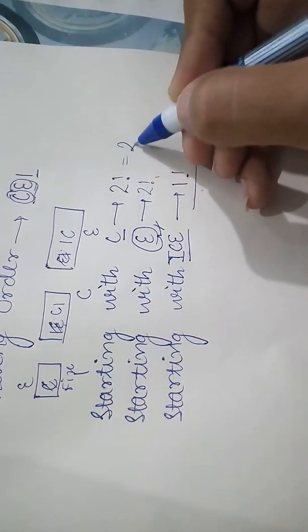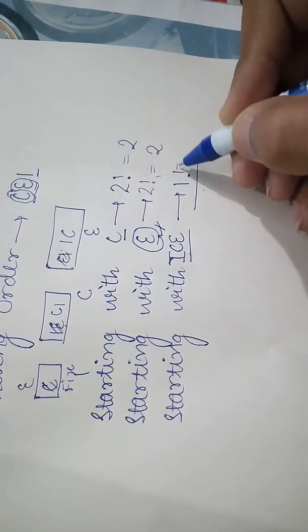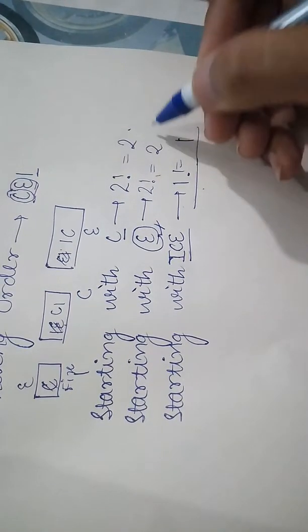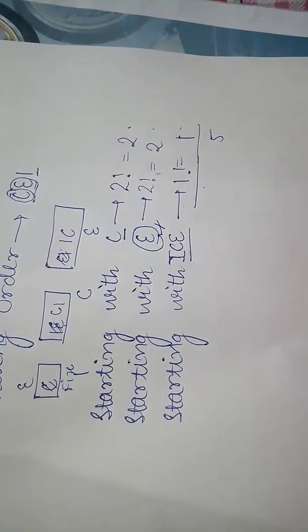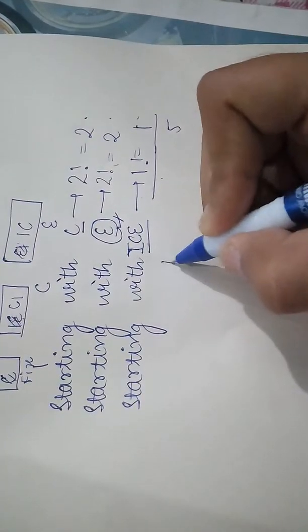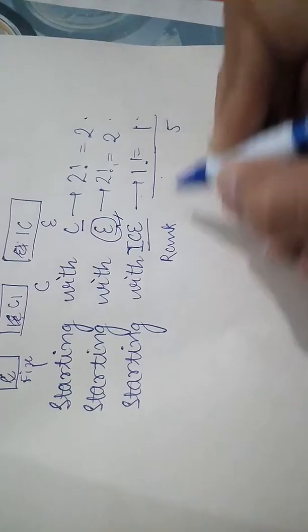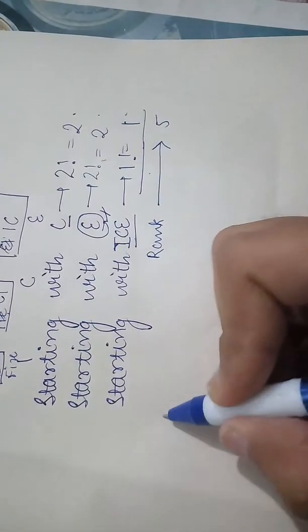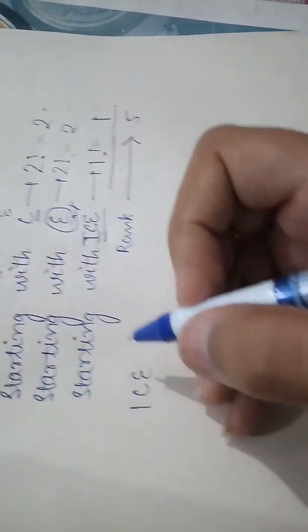So, two factorial ways equals to two, two factorial again two, one factorial one. The total ways we have two, two and one, that is five ways. So rank of this word ice is fifth. We can check how the rank of ice will come in our dictionary.